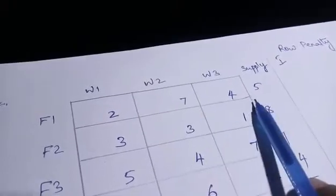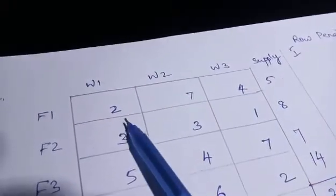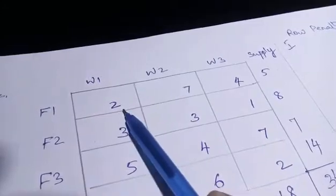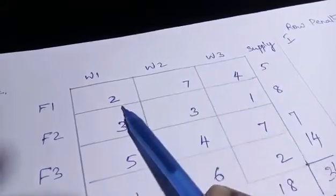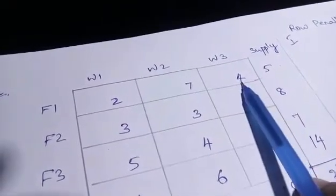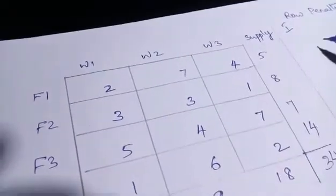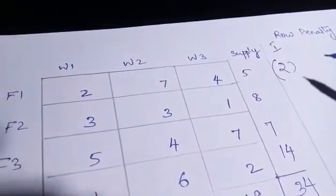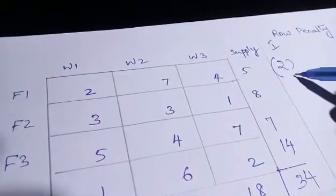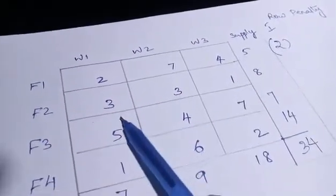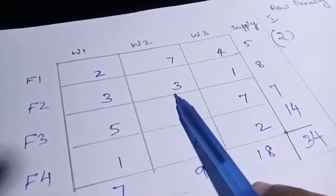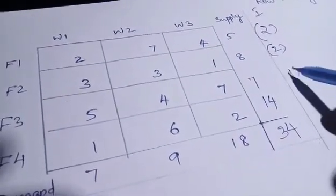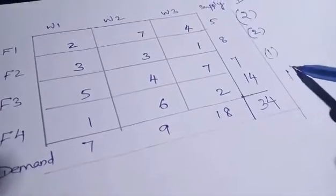For row 1, values are 2, 7, 4. The minimum value is 2 and the second smallest is 4, so the row penalty is 4 minus 2 equals 2. For row 2, values are 3, 3, 1, so 3 minus 1 equals 2. For row 3, 5 minus 4 equals 1. For row 4, 2 minus 1 equals 1.